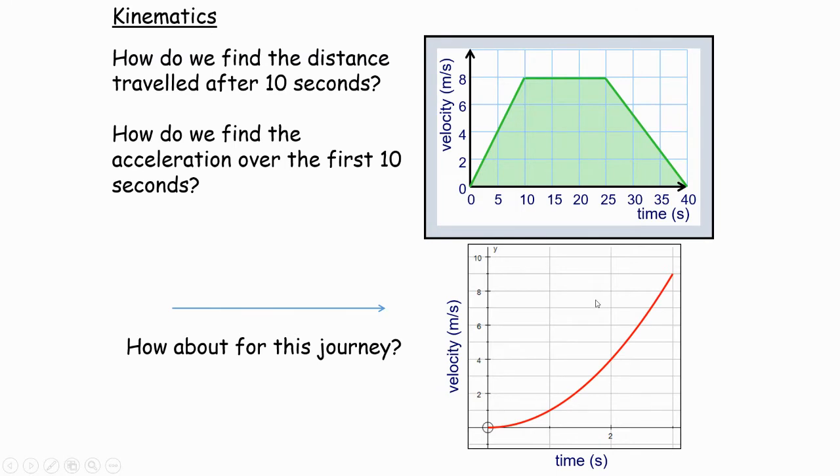So, if we look at these two graphs, we've got a travel graph here, and how do you find the distance traveled after 10 seconds? You would find the area underneath the graph between 0 and 10 seconds. It's a triangle, so it's 10 by 8. 10 by 8 divided by 2 is going to be 40, so it's going to be 40 meters.